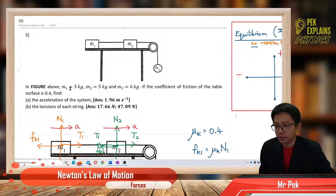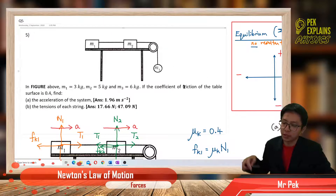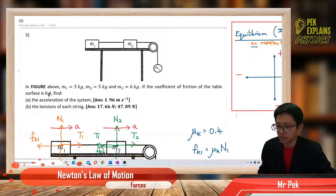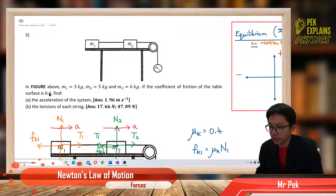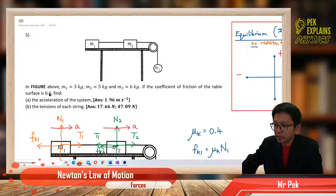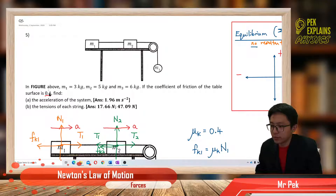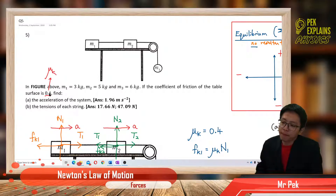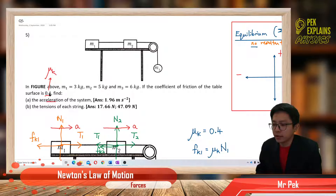All the masses are given — mass 1, mass 2, and mass 3. We notice that the table is rough because it gives the coefficient of friction. So it has friction; this is the mu. Mass is given. Now we need to find the acceleration and also the tension of the string.